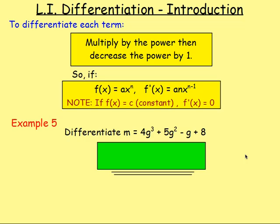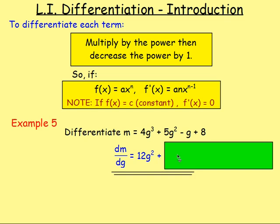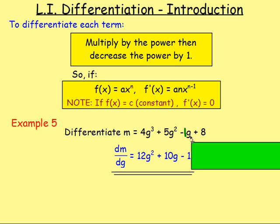Example 5: Differentiate m = 4g³ + 5g² − g + 8. We're differentiating m, so it becomes dm/dg. Multiply by the power: 4 times 3 gives 12, and g³ becomes g². Then 5 times 2 gives 10, and g² becomes g. For −g, that's −1g, so −1 times 1 gives −1, and g to the power of 0 is 1, so that just leaves −1. If you've just got g or x, it disappears leaving you with the coefficient. And 8 is a constant, so that disappears. The answer is dm/dg = 12g² + 10g − 1.